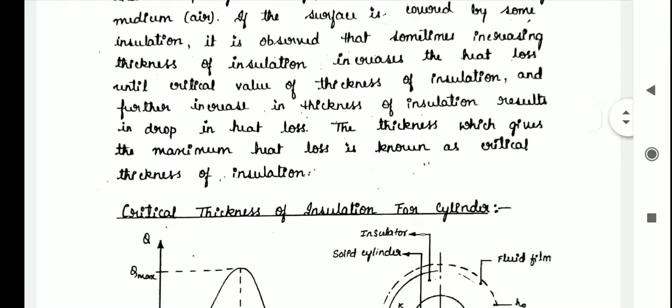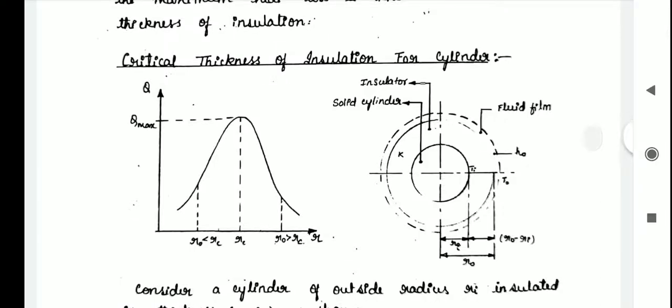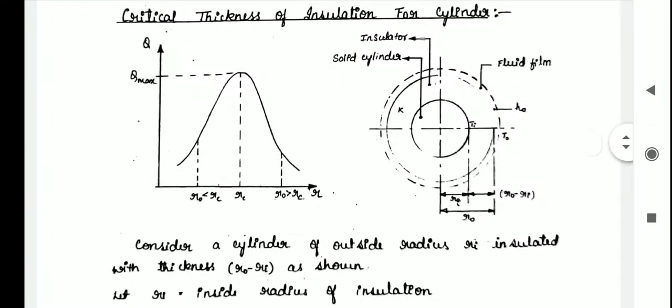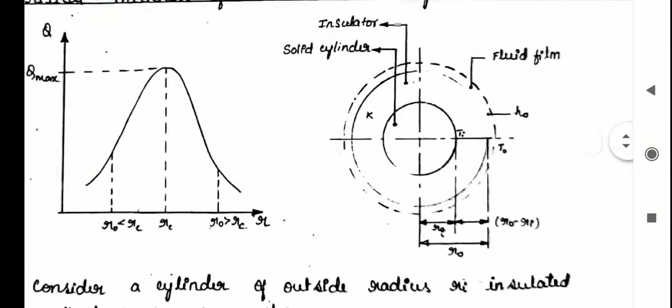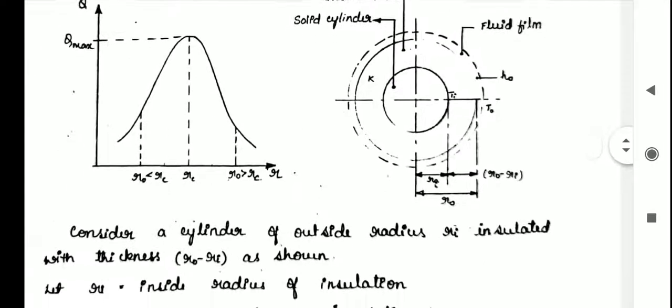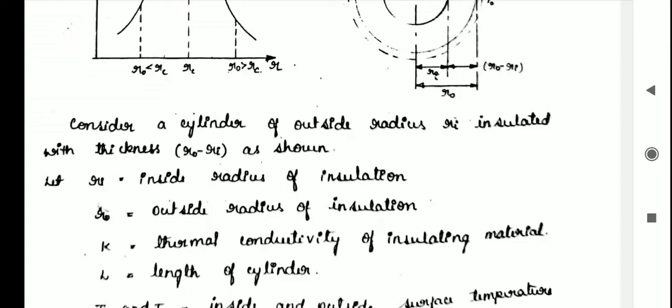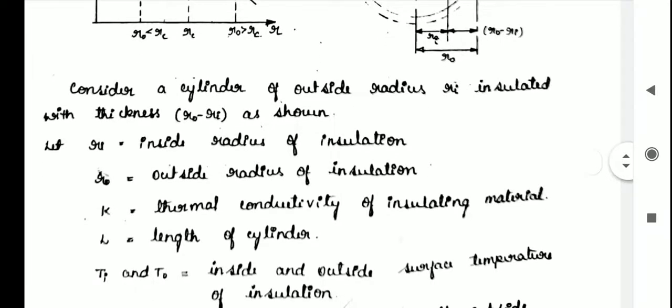Here I am deriving the critical thickness of insulation for cylinder. This is a cylinder. Consider a cylinder of outside radius Ri is insulated with a thickness Rout minus Ri as shown in this figure. Rout is the outside radius and Ri is the inside radius. The thickness is Rout minus Ri. Ri is the inside radius of insulation and Rout is the outside radius of insulation.